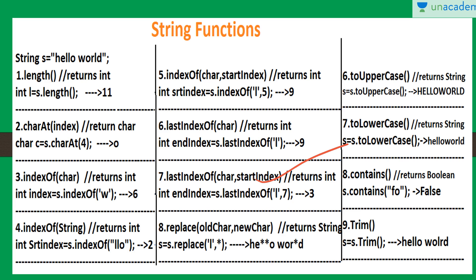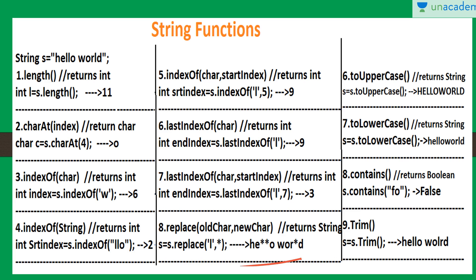If we want to replace a character with another character, we can use the replace() function. Here I am replacing 'L' with '*'. This replaces all occurrences of L with star. Since replace() returns a string, we need to store it in a reference. We can also convert the string to uppercase using toUpperCase(), which gives all characters in uppercase, or to lowercase using toLowerCase().